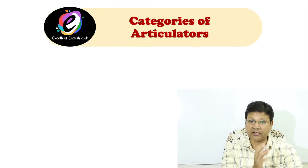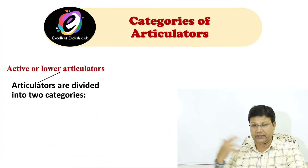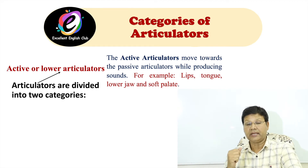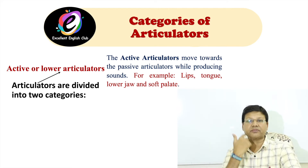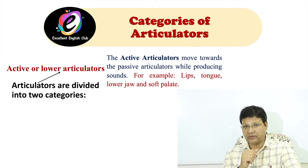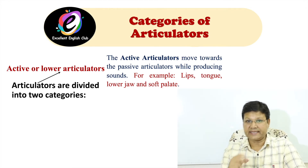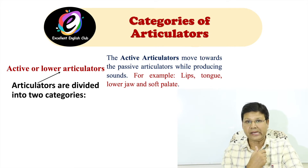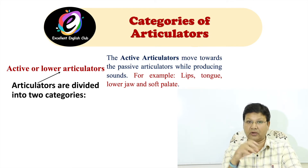Articulators are divided into two categories. Number one: active or lower articulators. The active articulators move towards the passive articulators while producing sounds. For example: lips, tongue, lower jaw, and the soft palate — which I told you about in the previous lecture. The soft palate raises sometimes and lowers sometimes. These are the active articulators — they move. Our tongue moves, our lower jaw moves up and down, and our lips also move. The part which moves is called an active articulator.